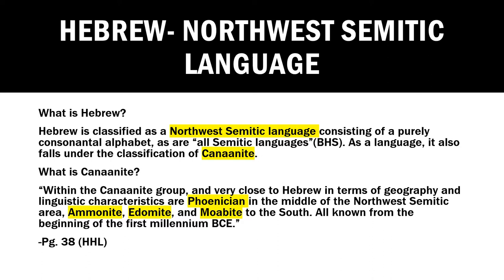What is Hebrew? Hebrew is classified as a Northwest Semitic language consisting of a purely consonantal alphabet, as are all Semitic languages. It also falls under the classification of Canaanite. Within the Canaanite group, and very close to Hebrew in terms of geography and linguistic characteristics, are Phoenician, Ammonite, Edomite, and Moabite — all known from the beginning of the first millennium BC.